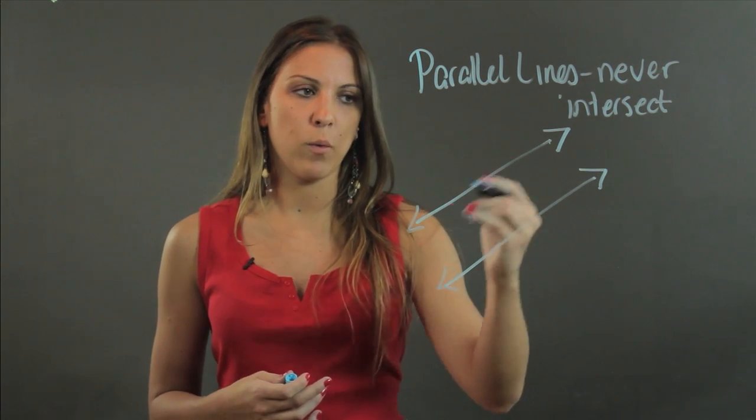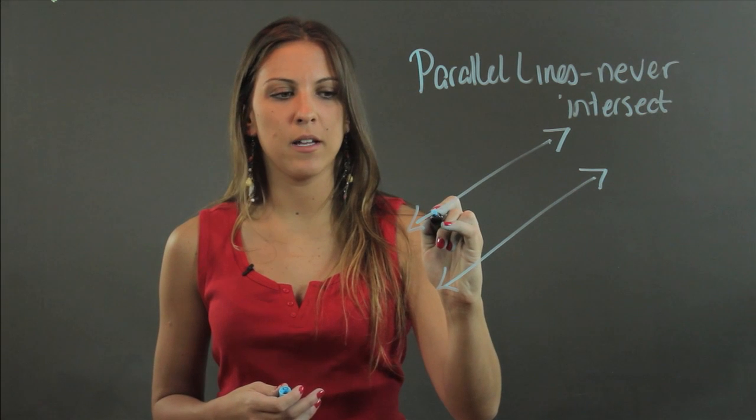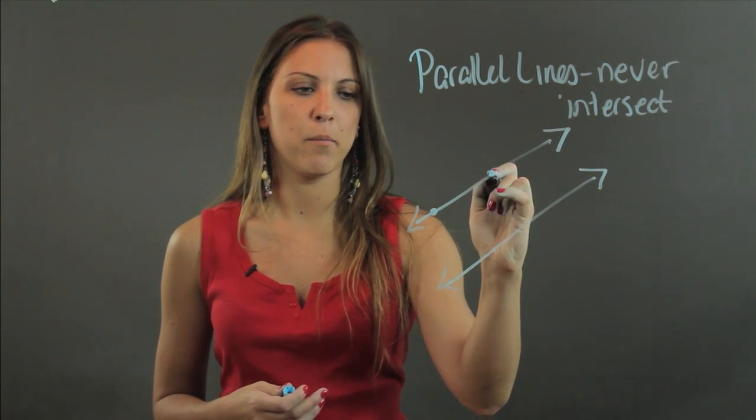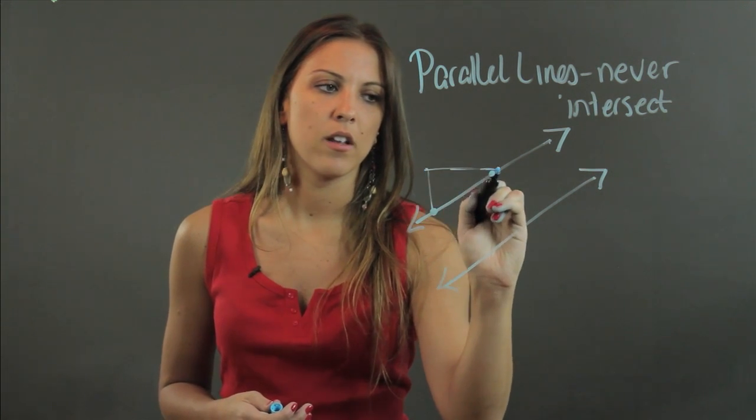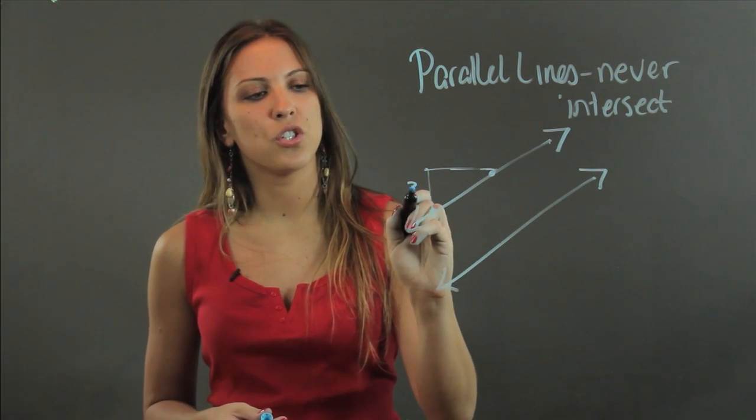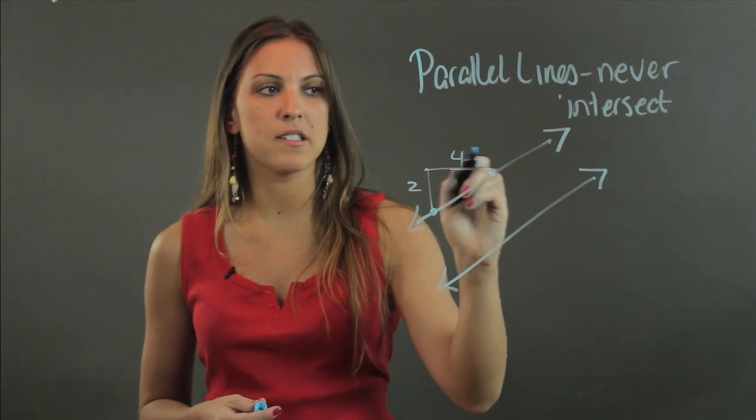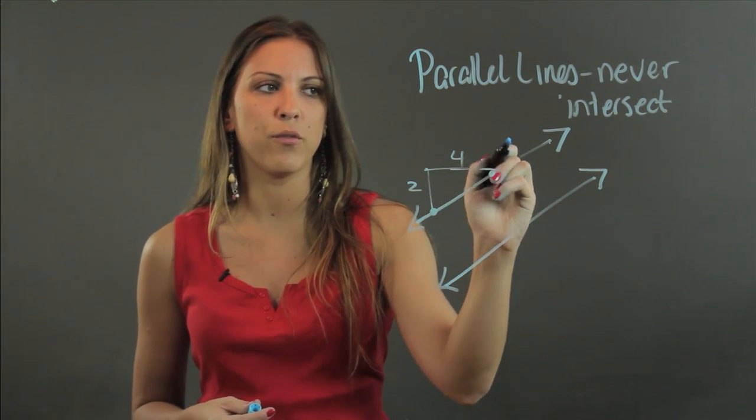So what you would do is look at one line and pick two points on it. So let's say I pick point A and point B, and I would have to find what is the rise over run from this point to this one. So if I rose two and I ran four, that means that my slope is one-half. I rose two, ran four, my slope here is one-half.